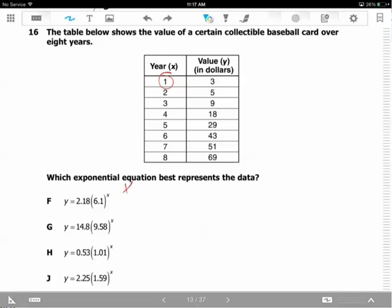If x equals 1, what will be y for each option? For F, y will be 2.18, which I'll approximate to 2, times 6.1 to the power of 1, which is 6. That gives us 12, but in the table we have 3 as the value. F is not good, moving on to the next one.